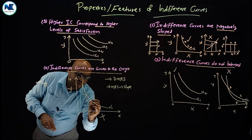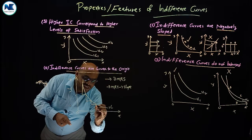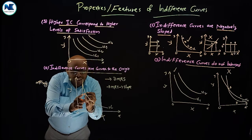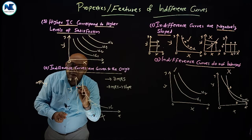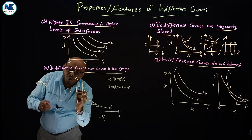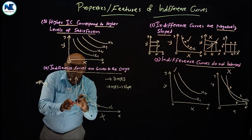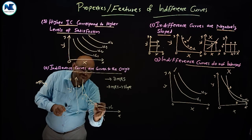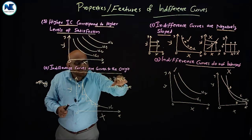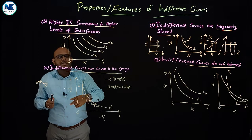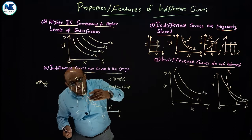For example, if you get one unit of X, you give up 4Y; in the second stage, you give up 3Y; for the next extra unit of X, you give up 2Y; then you give up 1 unit of Y. This is the law of diminishing marginal rate of substitution. Therefore, the indifference curve is convex to the origin.